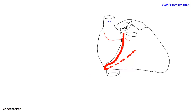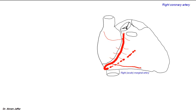The right coronary artery provides anterior ventricular branches to the right ventricle, and also atrial branches to the right atrium. Close to the inferior margin of the heart — what is called the acute margin — the right coronary artery provides a marginal branch, called the acute marginal branch or right marginal branch. This marginal branch passes parallel to the inferior border of the heart and supplies the right ventricle, but does not reach the apex of the heart.